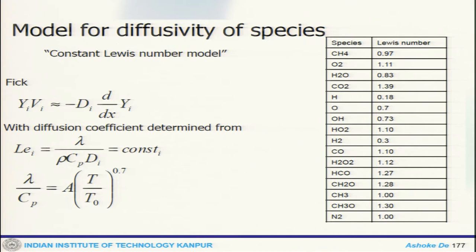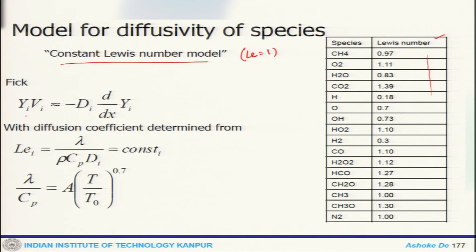One thing which is required is the diffusivity of the species. For the time being, we will assume the constant Lewis number model, meaning Lewis number equals 1. Typically, if you look at the variation of Lewis number for different species, this is how it varies. Once you assume Lewis number equals 1, that means your thermal diffusion and mass diffusion will be of the same order. We will use Fick's law of diffusion, written in terms of gradient, and then we get the relationship between lambda and Cp with their temperature dependency.